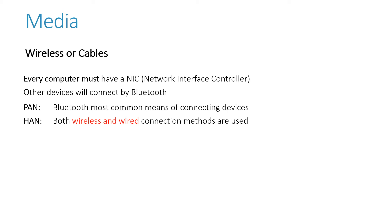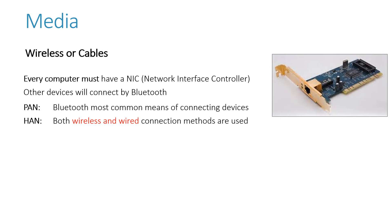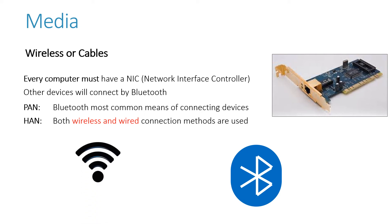The media — we can have wireless media or cables. Every computer, to be able to connect to the network, needs something called a NIC, which stands for Network Interface Controller. Some devices can connect by Bluetooth. Small home devices and smart home devices usually connect by Bluetooth. In a PAN, Bluetooth is also the most common means of connecting devices. And in a HAN, we use both wireless and wired connection methods. Here's what a NIC looks like — there's the symbol for Bluetooth and the symbol for Wi-Fi.